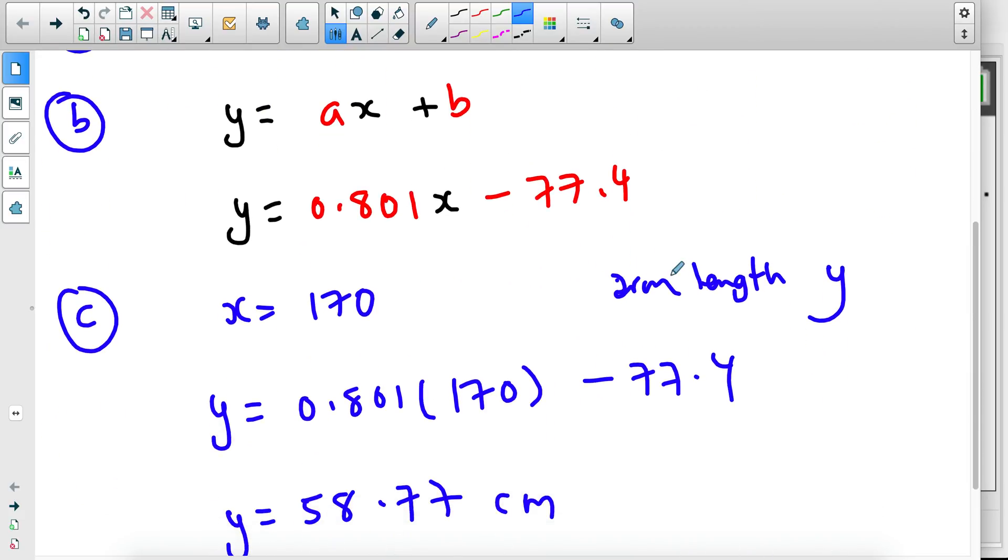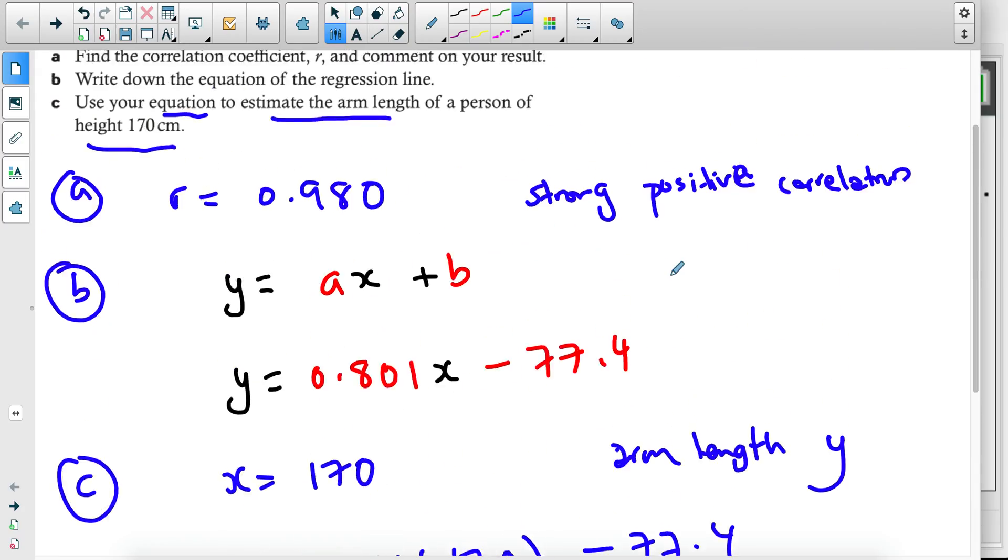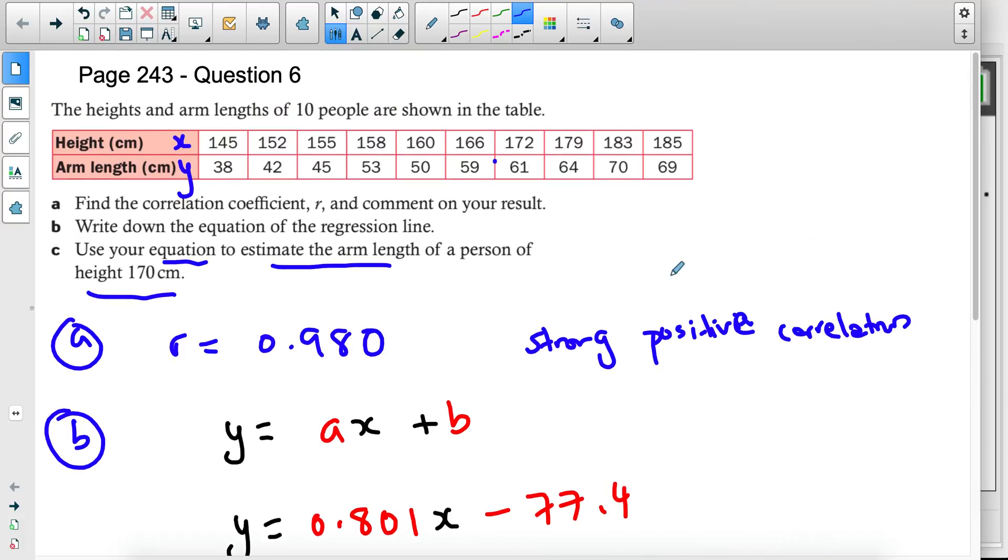So always try to make sense of the values you get. And that's how you solve these simple regression line, line of regression questions. There are more complicated ones that are included in paper two, but that I might do in another video. As for now, this is what you need to master. Do attempt the rest of the questions on page 243 and the rest of the book. Hopefully this video made this clearer.